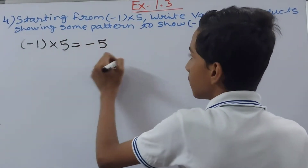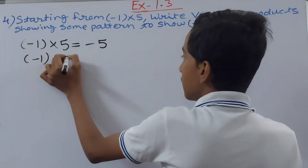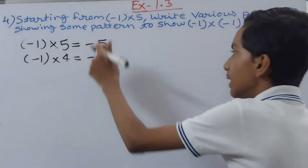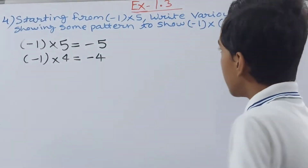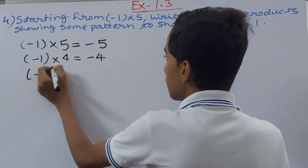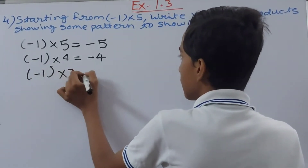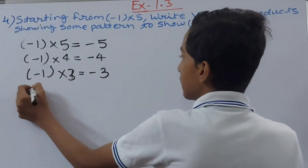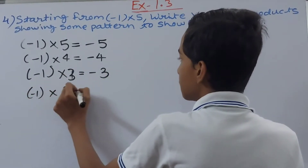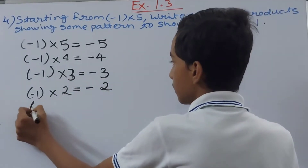So first we have -1 × 5 = -5, then -1 × 4 = -4. Like this we keep going: -1 × 3 = -3, and -1 × 2 = -2.